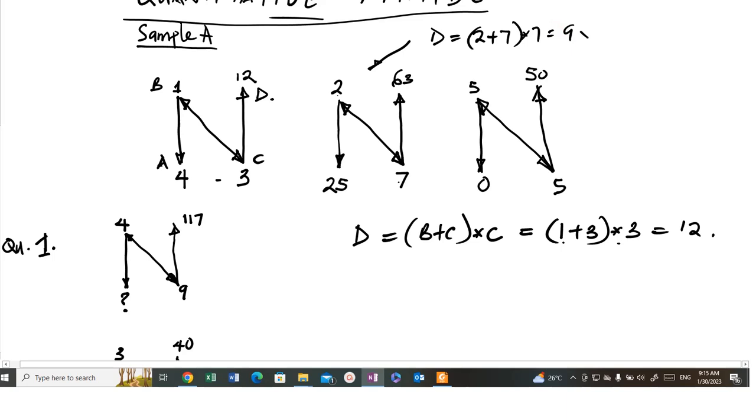Now, for this one, you have D, which is equal to 0 plus 5 times 5. So, 10 times 5 is 50. So, now, from this formula...